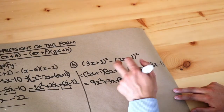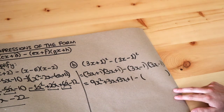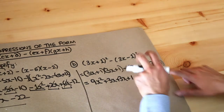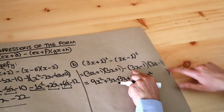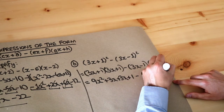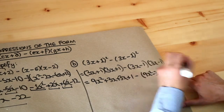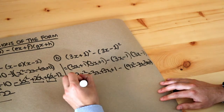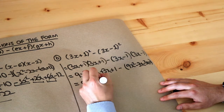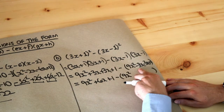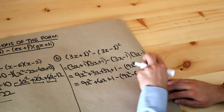And this is the key bit: whenever we subtract something we're expanding, we expand it into a blank single bracket first. So we put minus and a big empty single bracket, then expand the two brackets into it. 3x times 3x is 9x squared, 3x times minus 1 is minus 3x, minus 1 times 3x is minus 3x, and minus 1 times minus 1 is plus 1. Tidying up: 9x squared plus 6x plus 1, and inside the bracket: 9x squared minus 6x plus 1.